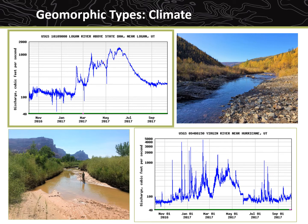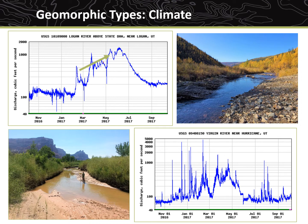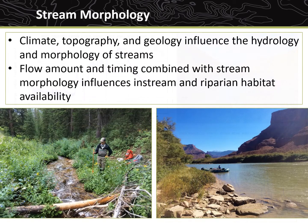For example, on the left is a hydrograph — a graph showing discharge patterns through time — of the Logan River near Logan, Utah. On the right is a hydrograph of the Virgin River near Hurricane, Utah. The Logan River is primarily sourced from snowmelt from the surrounding high elevation mountains, which tends to yield the most water during the late spring and early summer, accounting for the large spike in the graph in May and June, and lower flows for the rest of the year. The Virgin River originates in mountains of lower elevation and primarily relies on rain events and groundwater for its flow, accounting for the continuous spikes in the graph which are responses to major rain events during summer monsoons. In summary, the climate, topography, and geology of watersheds influences the hydrology and morphology of streams. Flow amount and timing combined with stream morphology are two key factors influencing in-stream and riparian habitat.